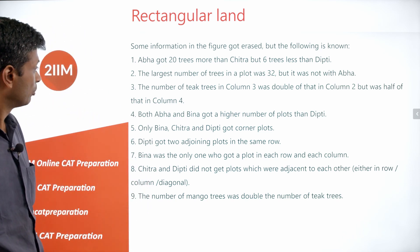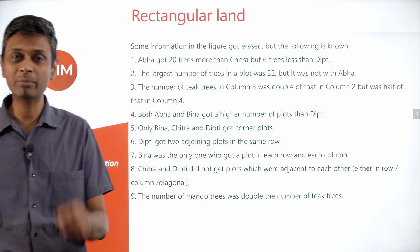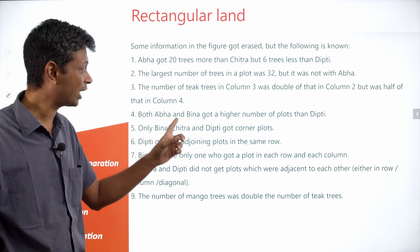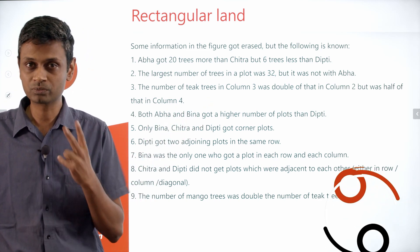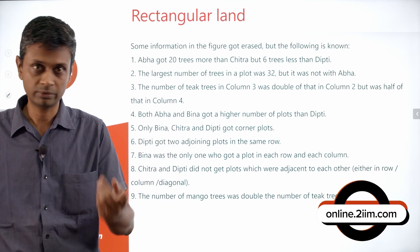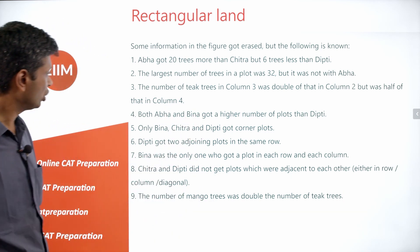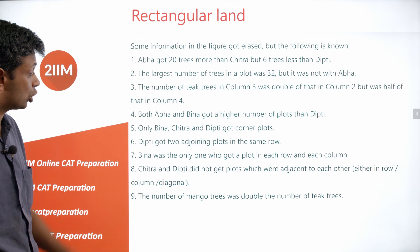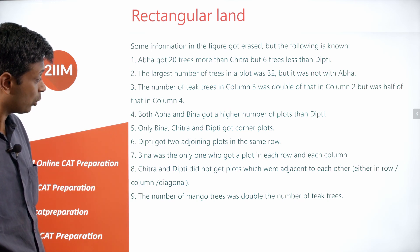Both Ava and Bina got a higher number of plots than Deepti. Everybody gets an even number of plots. The minimum anyone gets is two, so Ava and Bina should have gotten at least four each. Only Bina, Chitra, and Deepti got corner plots, and Deepti got two adjoining plots in the same row.